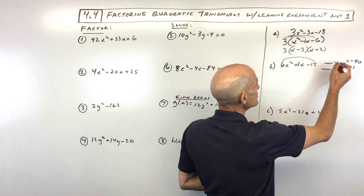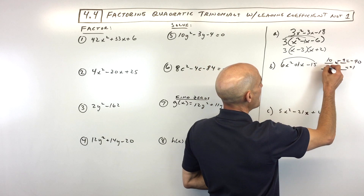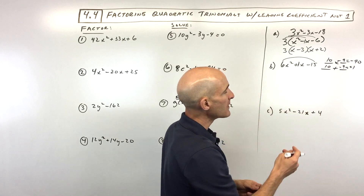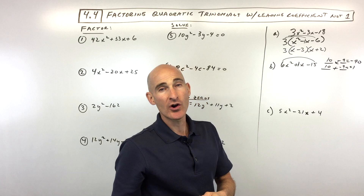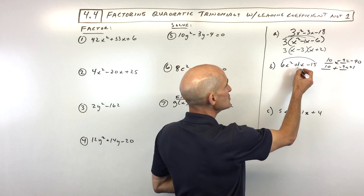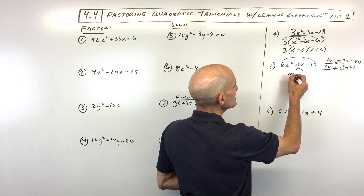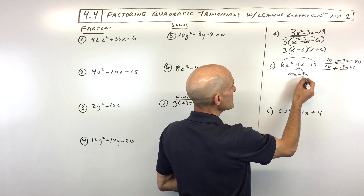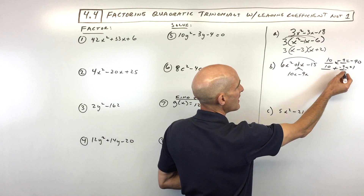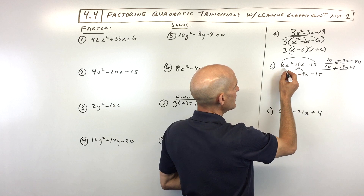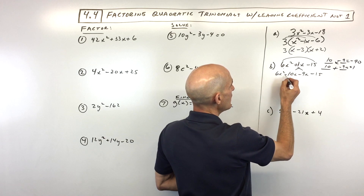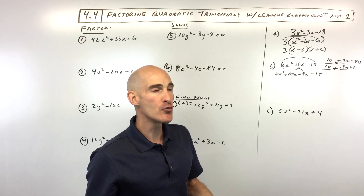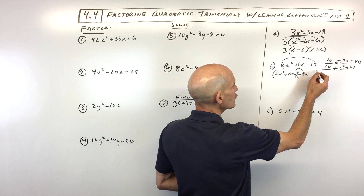It looks like positive 10 and negative nine, because 10 times negative nine is negative 90, but 10 plus negative nine is positive one. This is called splitting the middle term and factoring by grouping. You split that middle term into 10x and negative 9x — you can see how those add up to 1x — then bring down the negative 15 and the 6x squared. Now you've got four terms, and when you have four terms, you think about factoring by grouping, so you group the first two and group the last two.